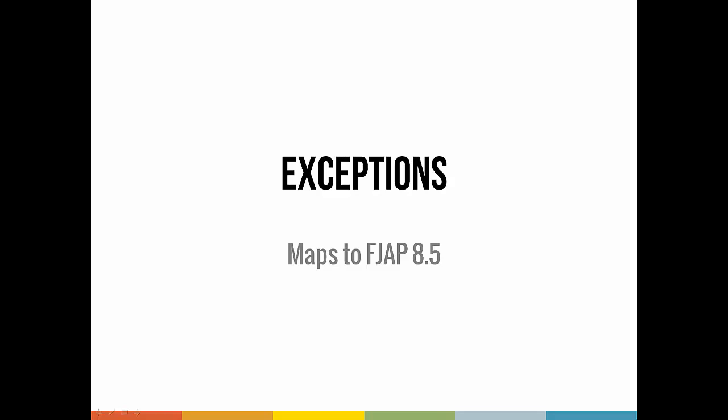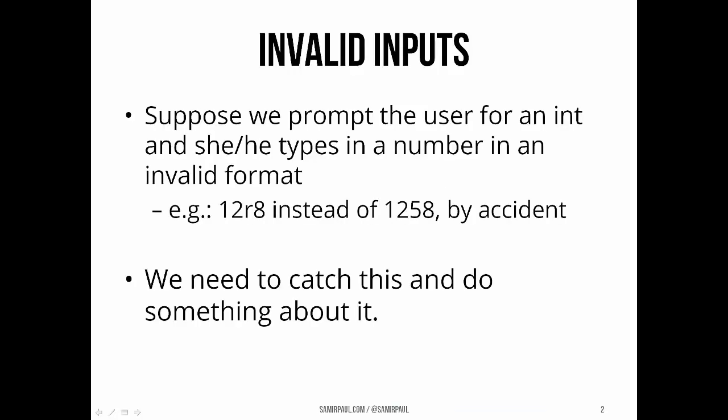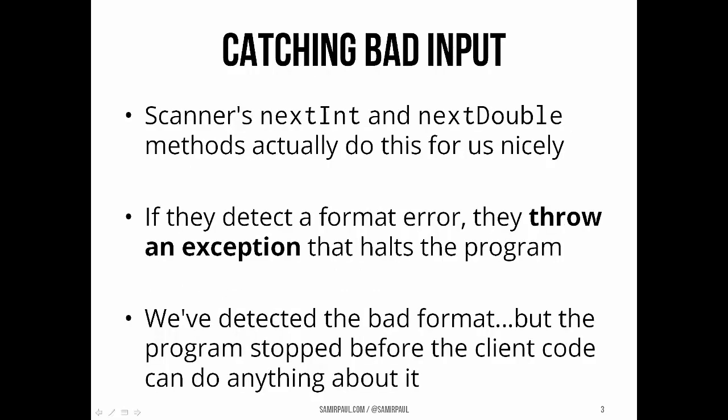We've seen a few types of errors we can encounter in a program, a few different types of exceptions that can be thrown. We saw IO exceptions when doing file input and output, and null pointer exceptions when working with objects and references. Today we're going to talk about what happens if the user enters a number in an invalid format — for example, typing 12R8 rather than 1258 by accident. We want to catch this error and do something about it. Whoever implements input methods has to detect and handle number format errors like those.